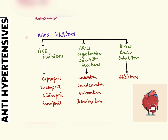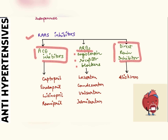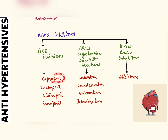In RAS inhibitors, we have ACE inhibitors, ARBs — that is angiotensin receptor blockers — and direct renin inhibitors, which include aliskiren. ARBs end with '-artan', so we have losartan, candesartan, valsartan, and telmisartan. ACE inhibitors end with '-pril', so we have captopril, enalapril, lisinopril, and ramipril.